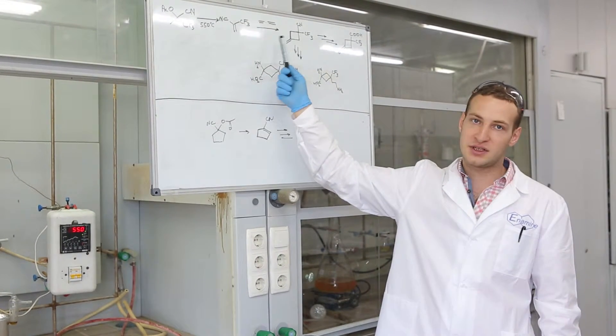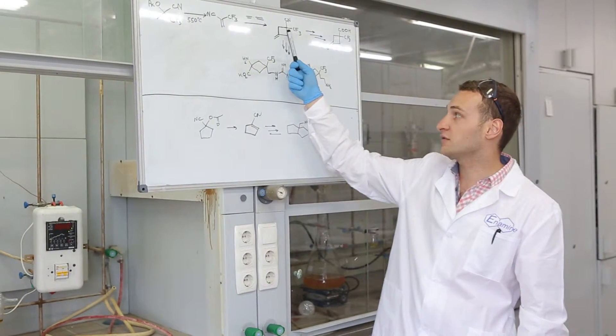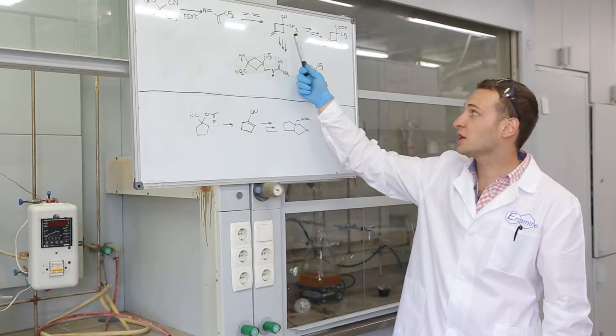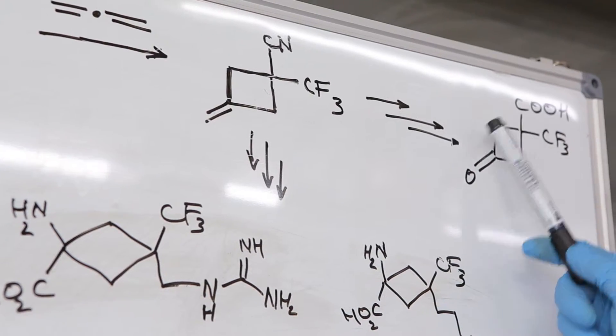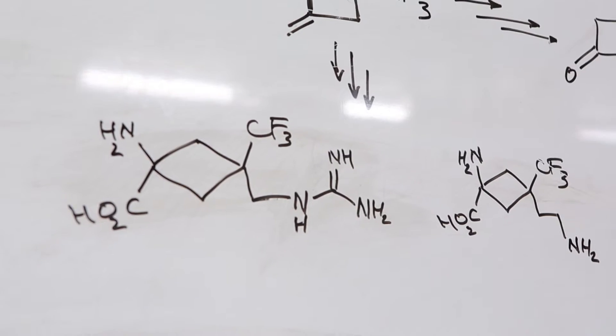The functionalization of this compound 2+2 reaction with alkene gave cyclobutene derivatives, which can be transformed to ketoacid or amino acids.